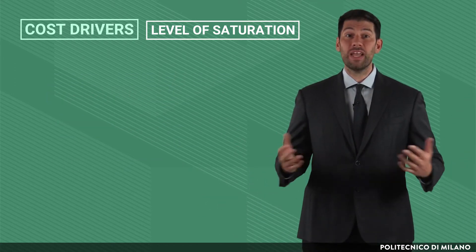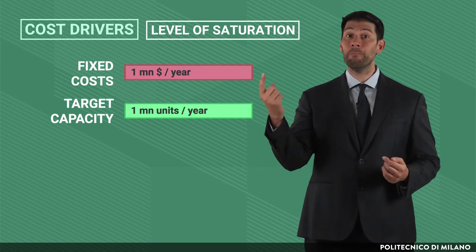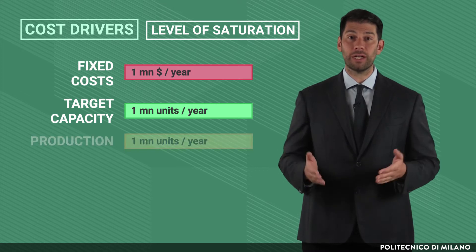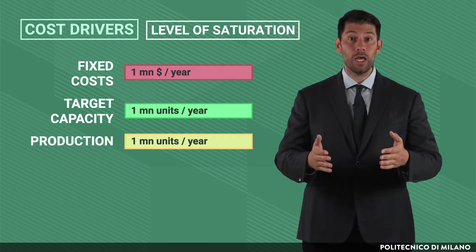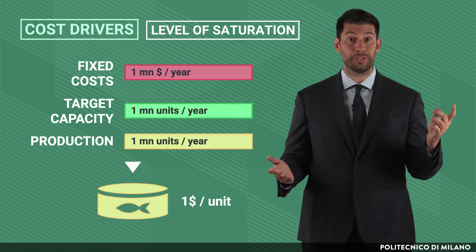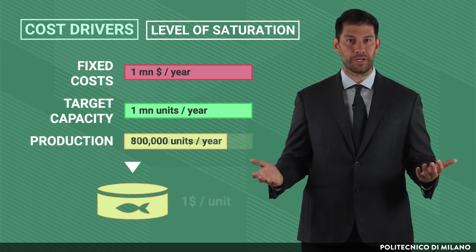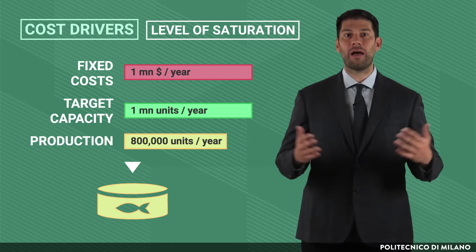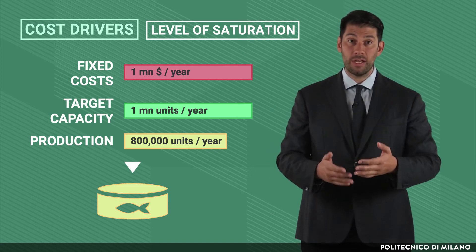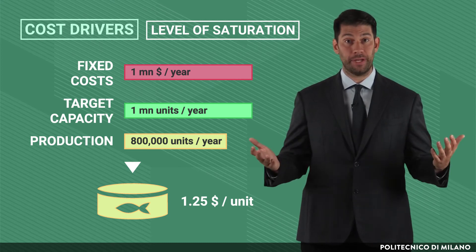To give an example, should fixed costs be one million dollars per year and target capacity one million units or transactions per year, by placing our actual production at target capacity, we would spread fixed costs and obtain an impact of one dollar per unit produced or transaction performed. If under-saturation occurs and actual production is 800,000 units per year, the fixed cost impact on a single unit or transaction is $1.25, and average cost per unit increases.